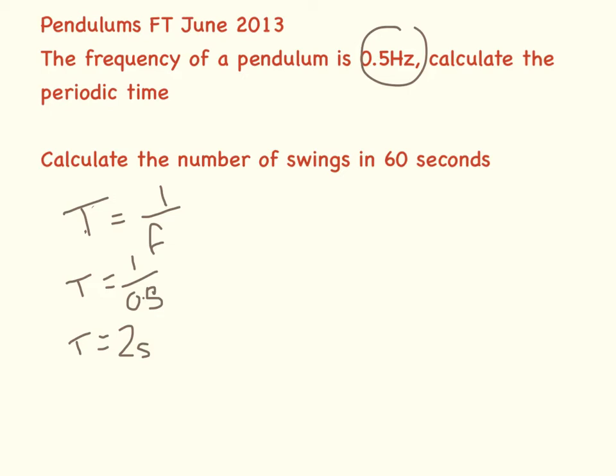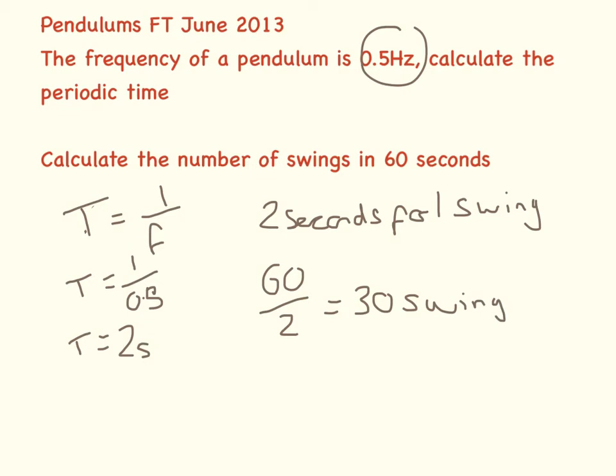So if it takes 2 seconds for one swing, we need to find out the number of swings in 60 seconds. We do 60 divided by 2 equals 30 swings.